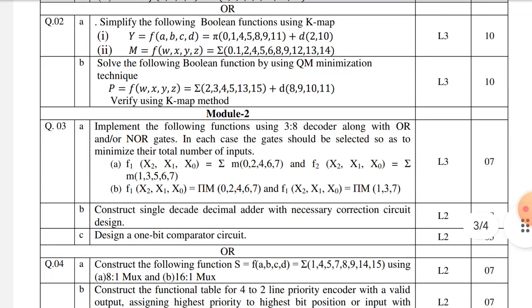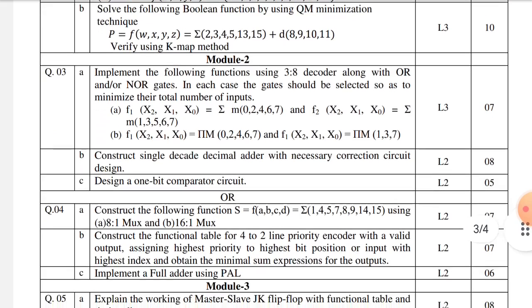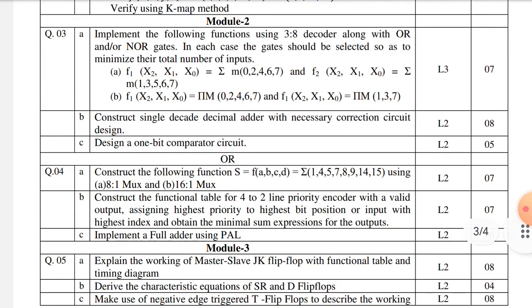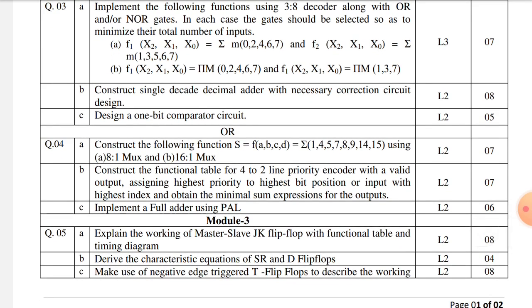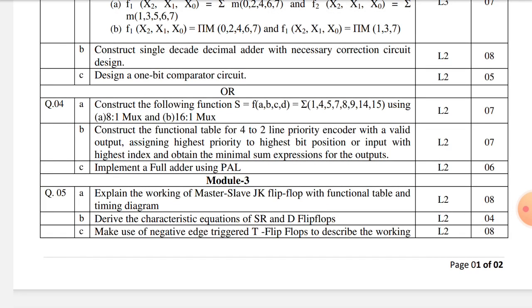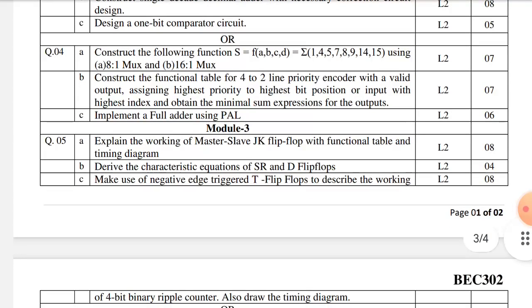The second module again, they have given 3-to-8 decoders you need to realize using 3-to-8 decoders, and you have to construct single decade decimal adder. We need to design 1-bit comparator circuit. You need to construct the following function using 8-to-1 and 16-to-1 mux.